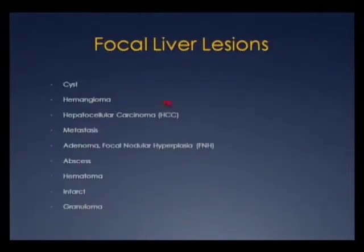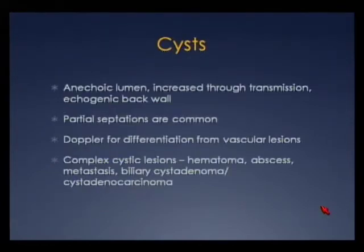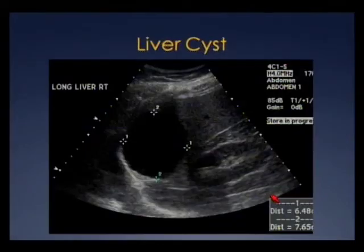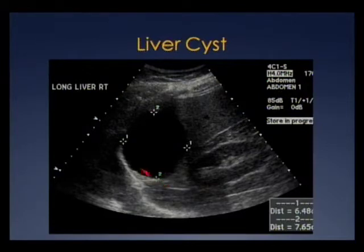We'll review the most common focal liver lesions. Cysts typically have an anechoic lumen, increased through-transmission, echogenic back wall. Small cysts can be harder to discern, so Doppler can help distinguish a small cyst from a vascular lesion. The differential for complex cystic lesions includes hematoma, abscess, metastases, biliary cystadenoma, and cystadenocarcinoma. Here's a large cyst in the right lobe — nearly 8 centimeters — with well-defined back wall, increased through-transmission, anechoic lumen, and a small septation.